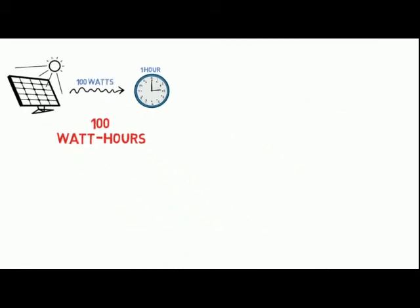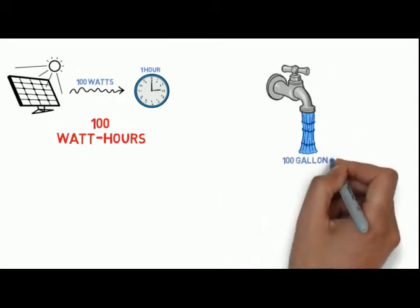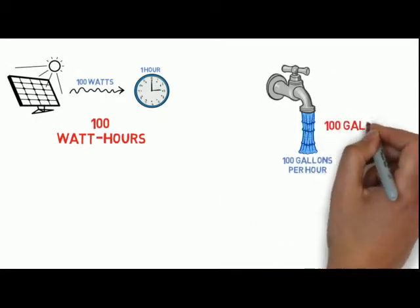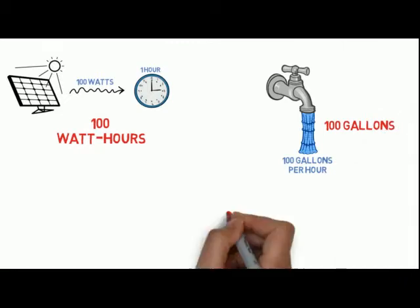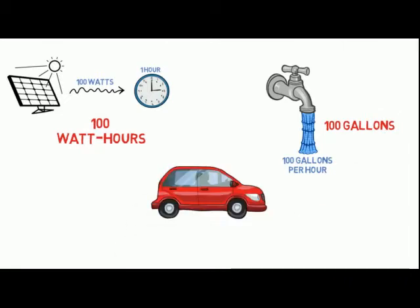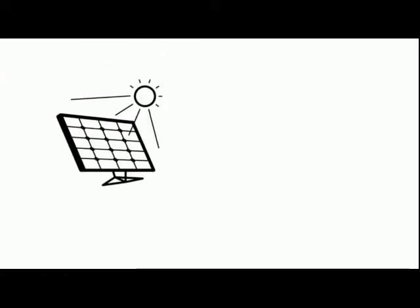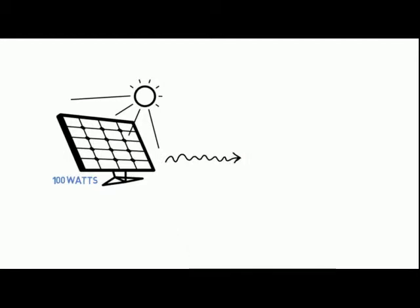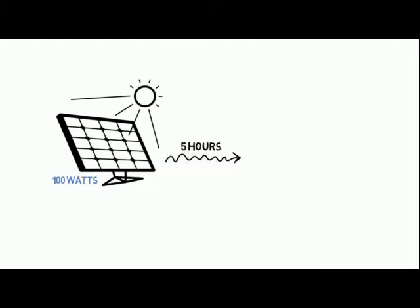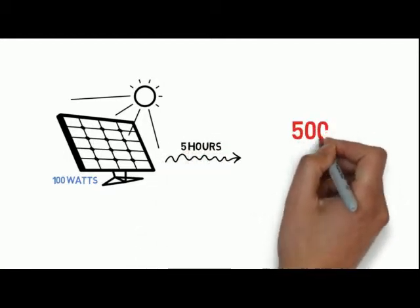Much like if you have a water faucet putting out 100 gallons per hour, it'll put out 100 gallons in one hour. For a car, the rate would be miles per hour. And if you were going 60 miles per hour for one hour, you would travel 60 miles. Let's say you use a 100 watt solar panel for 5 hours in one day. You just generated 500 watt hours of power.